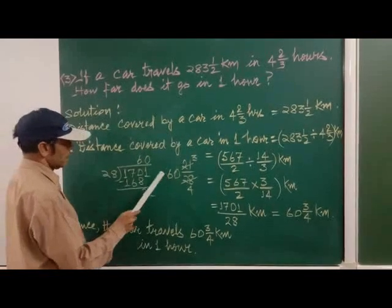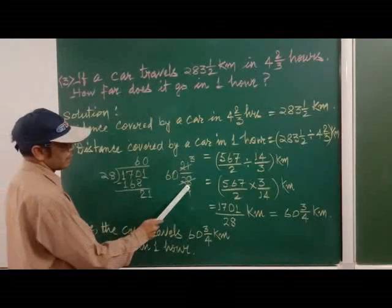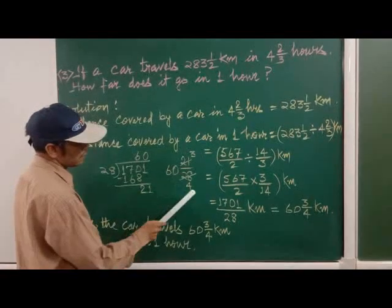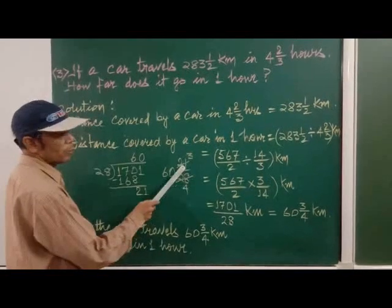So 60 will come here, 21 here and 28 will come here. Now we will see here. This is 21 and this is 28. So this will go by 7.